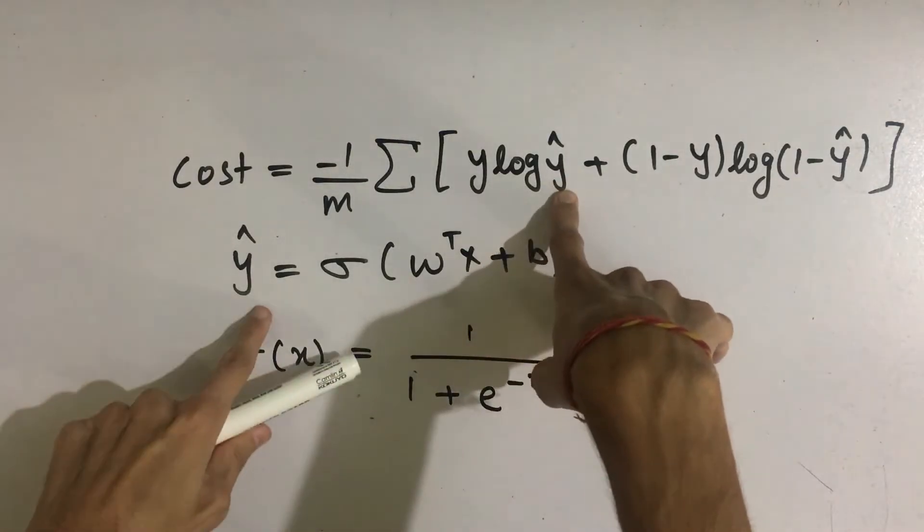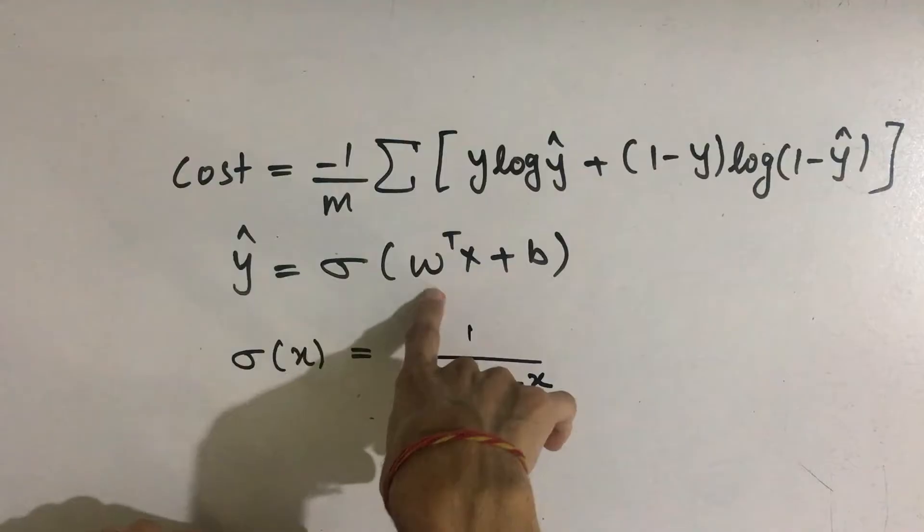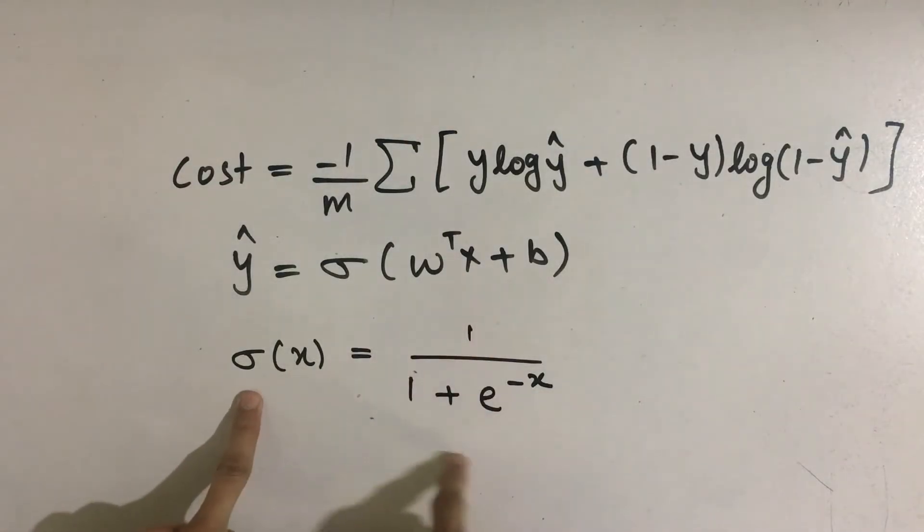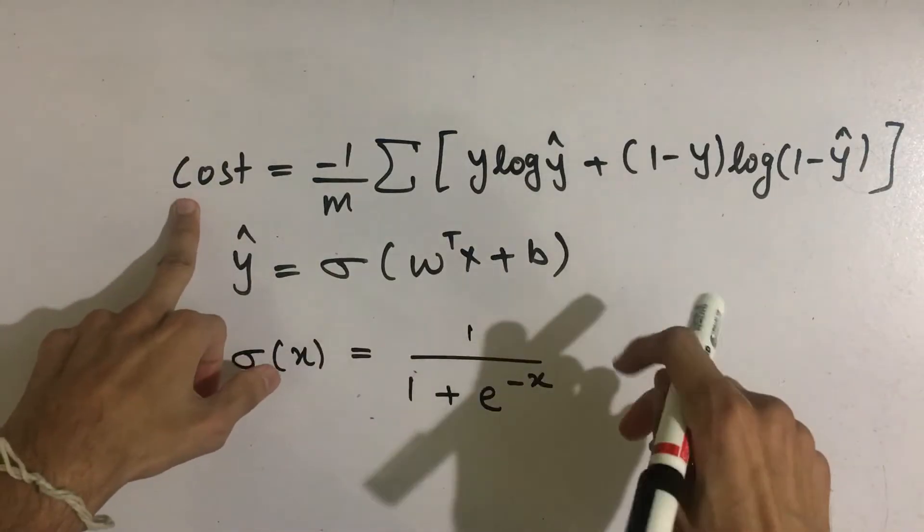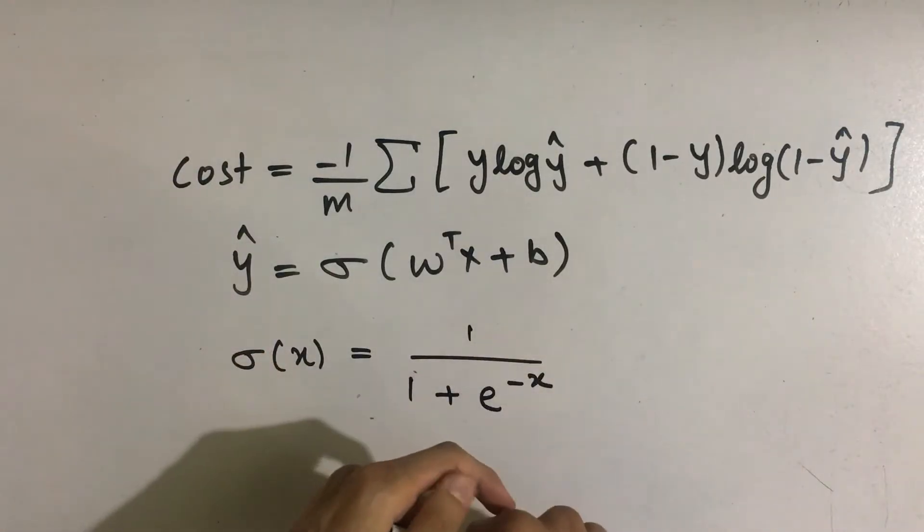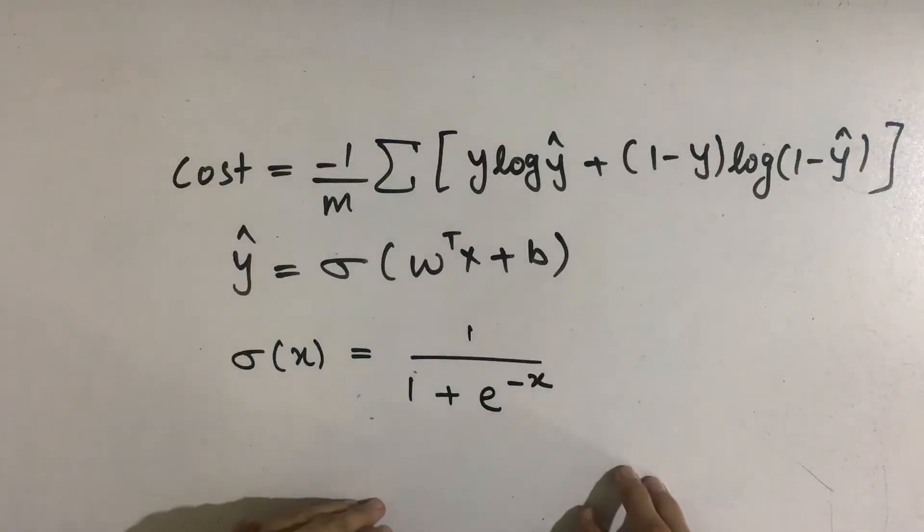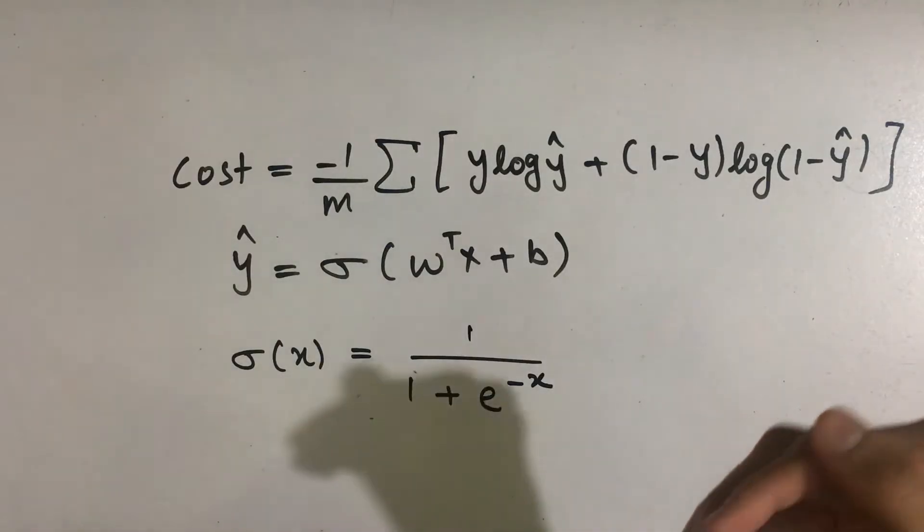Now y hat are our predictions which is given by sigmoid of w transpose x plus b, and sigmoid is given by this. So, as this cost function is the error representation, we need to minimize the error so that our accuracy gets increased.